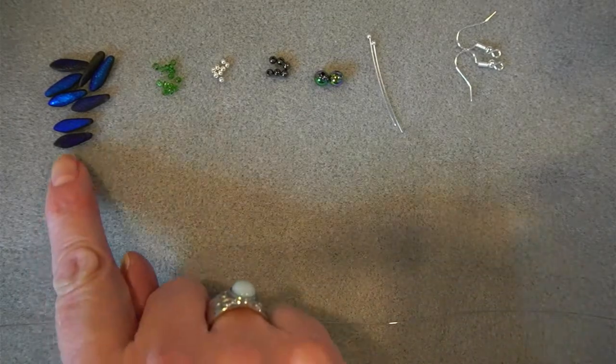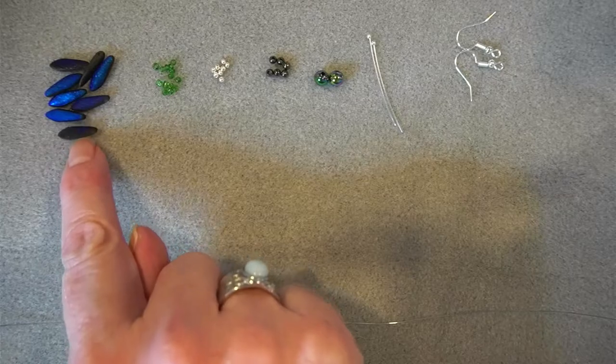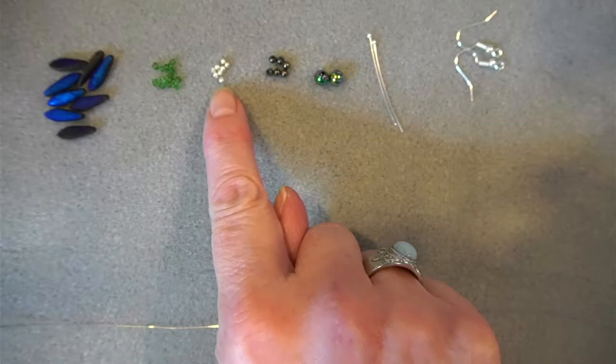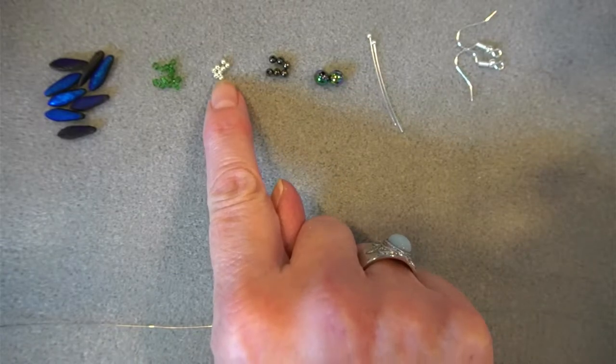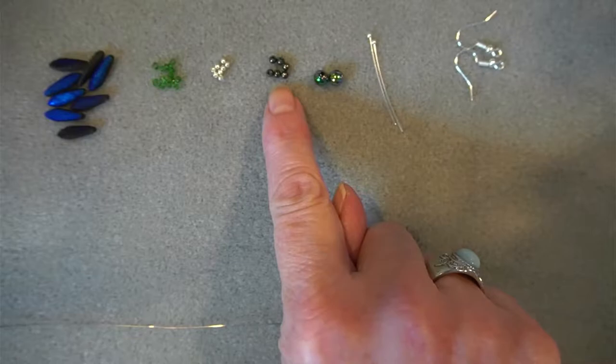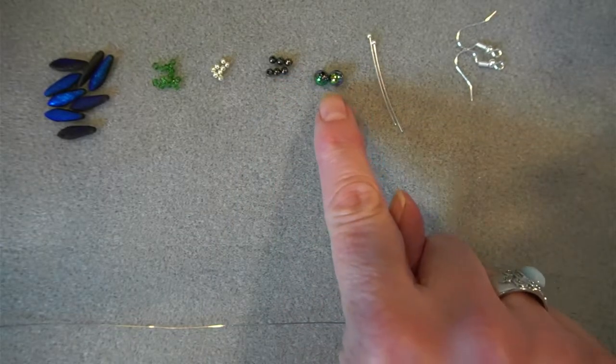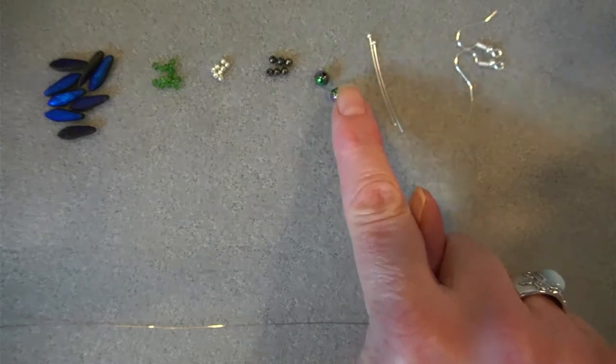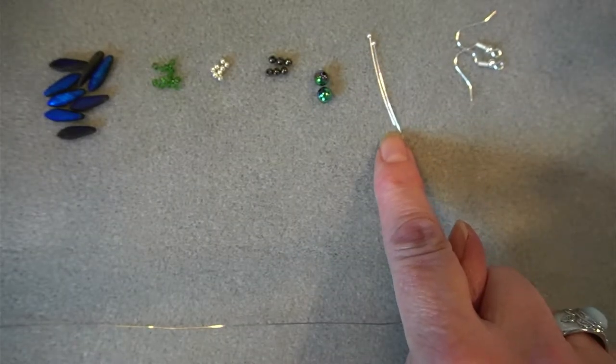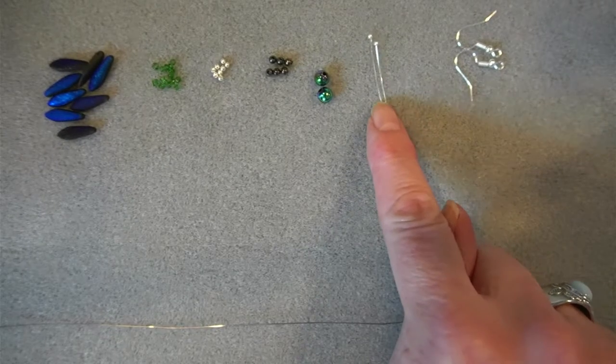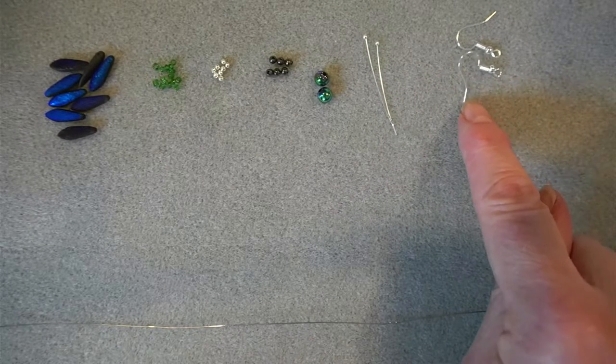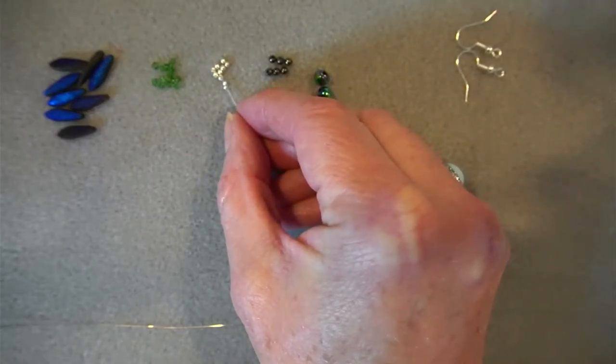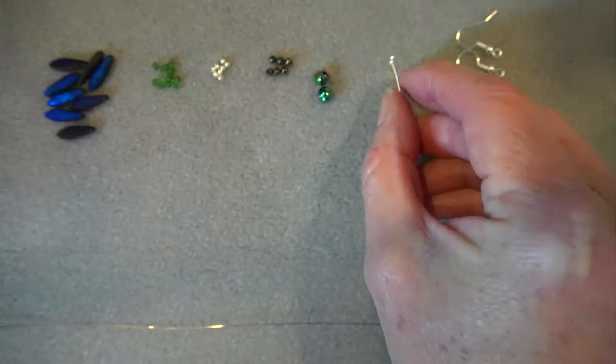What you're going to need to make these earrings is eight of these Czech glass daggers, 12 size 11 seed beads, eight 2 millimeter ball beads, six 3 millimeter ball beads, two of these vacuum beads - these are 6 millimeters, aren't they very cool with your iridescent colors - two 3.5 centimeter ball pins, and two ear wires. I chose ball pins because they look kind of like the beads, so it just adds an extra, it looks like it's an extra bead.